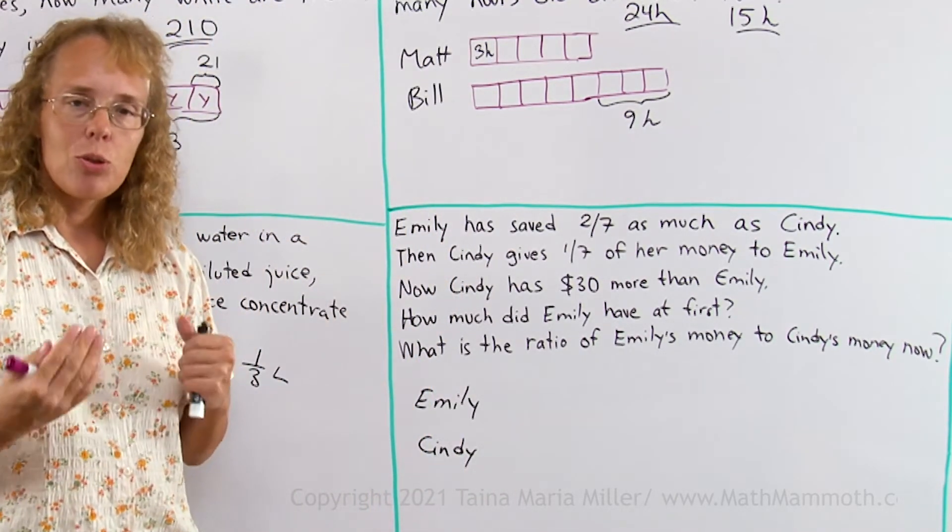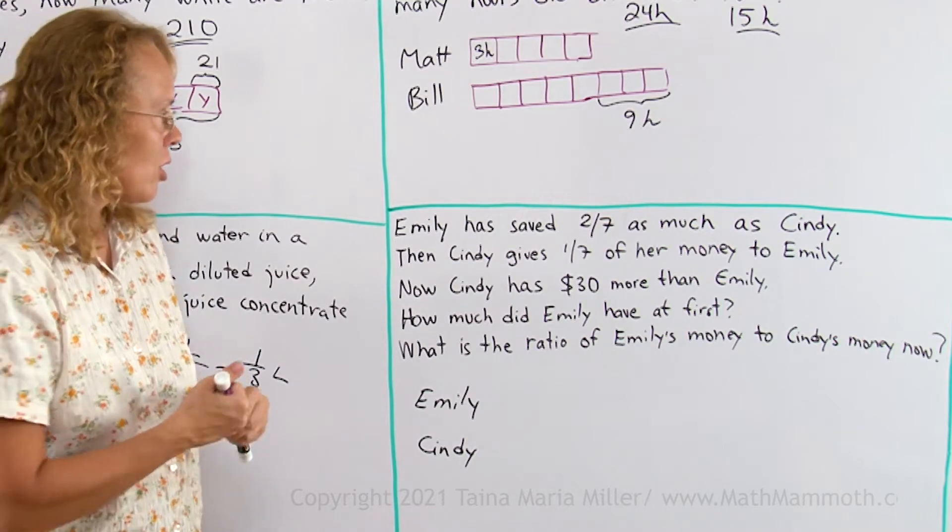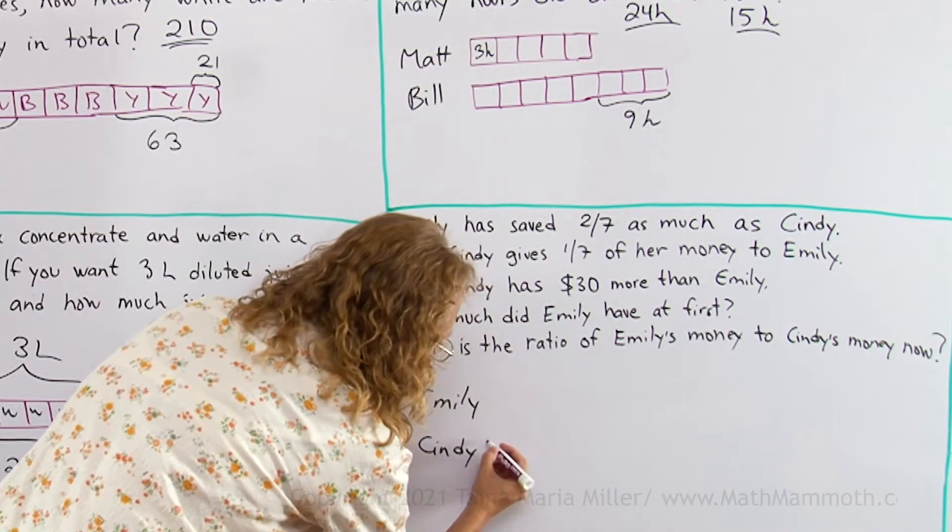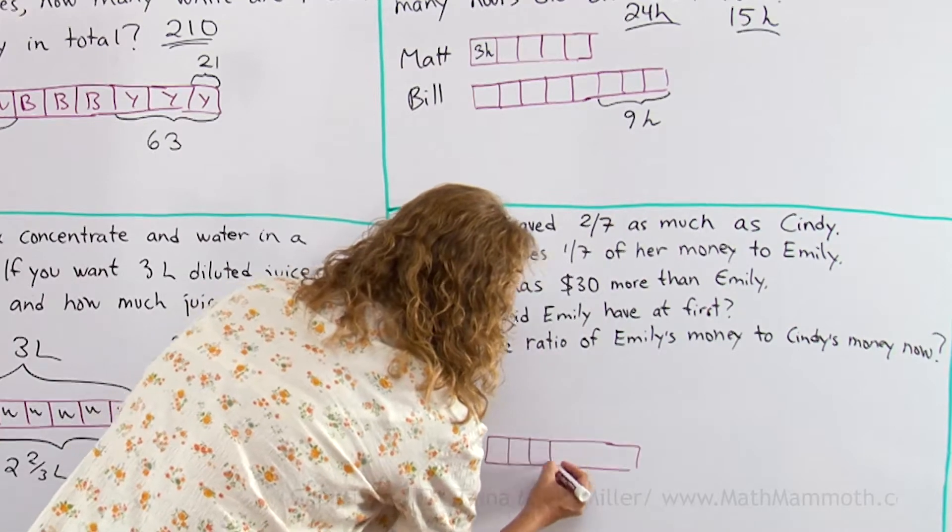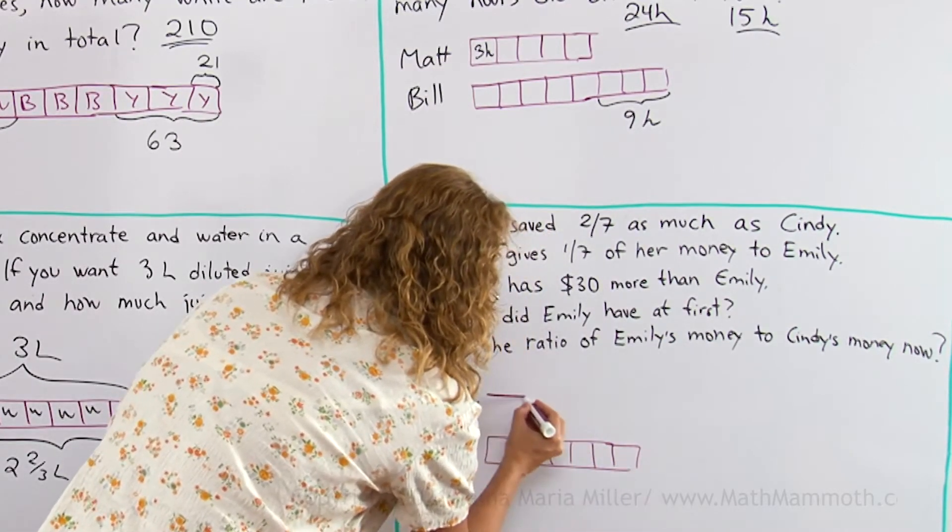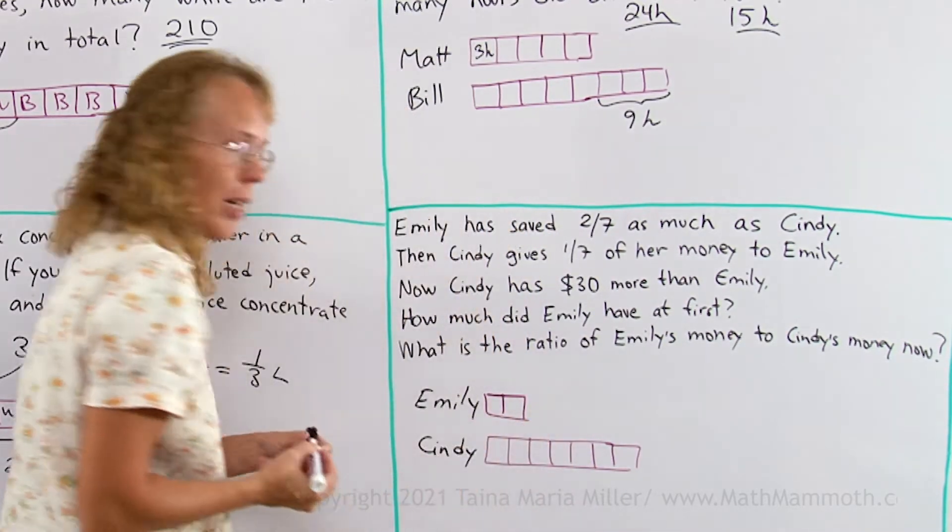Now, Emily has saved 2 sevenths as much, so it is as if Cindy has saved 7 parts. Cindy's savings are 7 parts, and Emily's are just 2 sevenths of that, 2 parts, right?